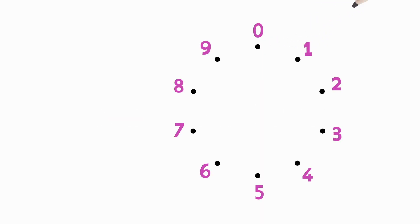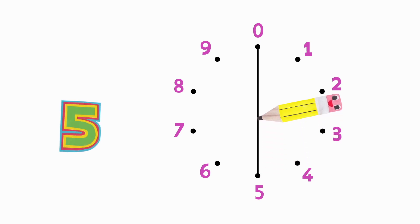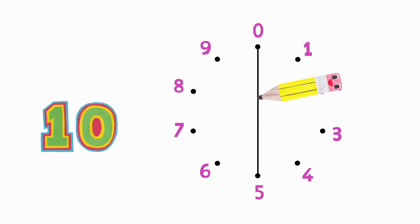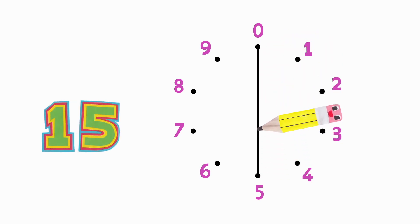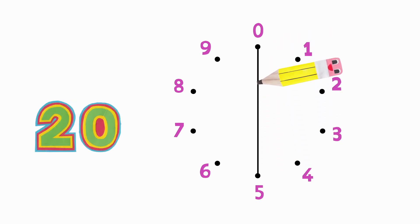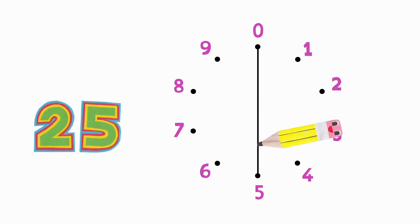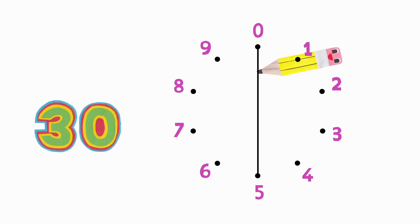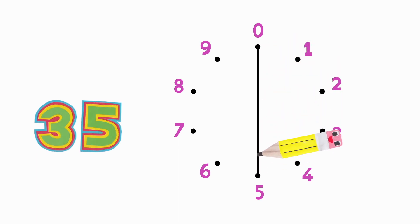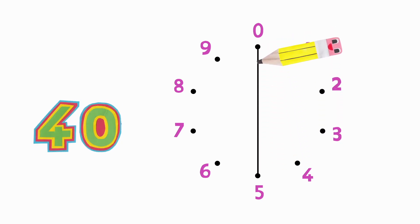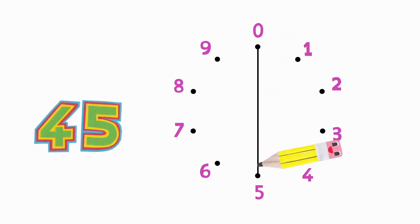Five times table. Five, ten, fifteen, twenty, twenty-five, thirty, thirty-five, forty, forty-five, fifty.